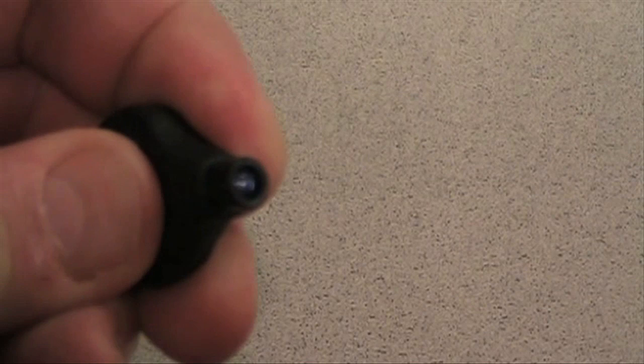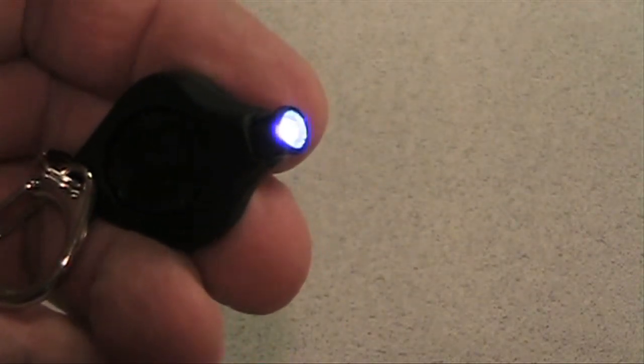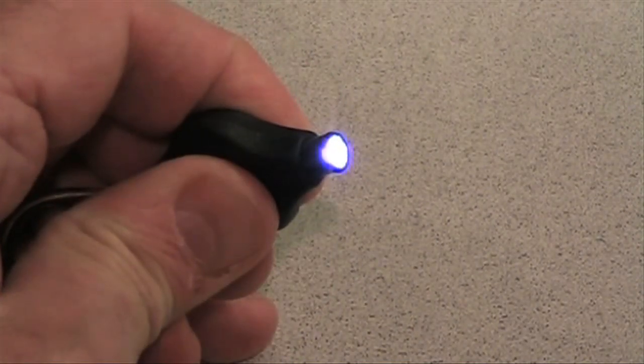You can easily adjust the brightness from dim to bright by squeezing and holding while the brightness increases. Release at desired brightness. The light will blink at full brightness.